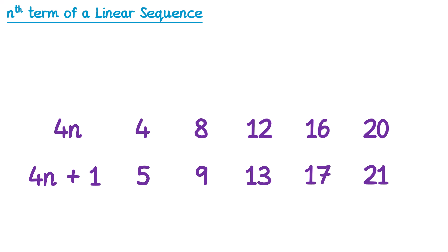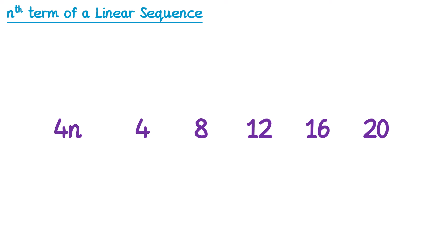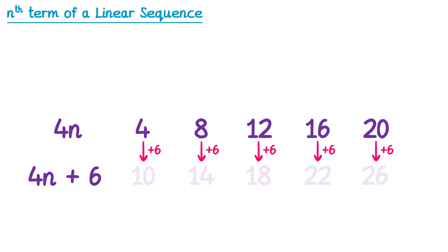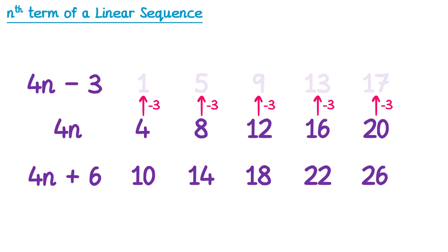We can also do this by subtracting a number. If we wanted to generate the sequence with nth term 4n subtract 1, we would subtract 1 from all of the numbers in the 4n sequence. To get the first term, we subtract 1 from 4, which is 3. To get the second term, we subtract 1 from 8, which is 7. This works if we add or subtract any number to 4n. For example, 4n plus 6 would just add 6 to all of the numbers in the 4n sequence. Or 4n subtract 3 would be 3 less than all the numbers in the 4n sequence.